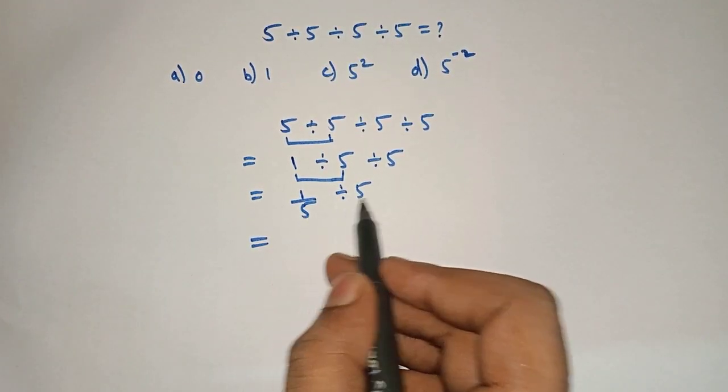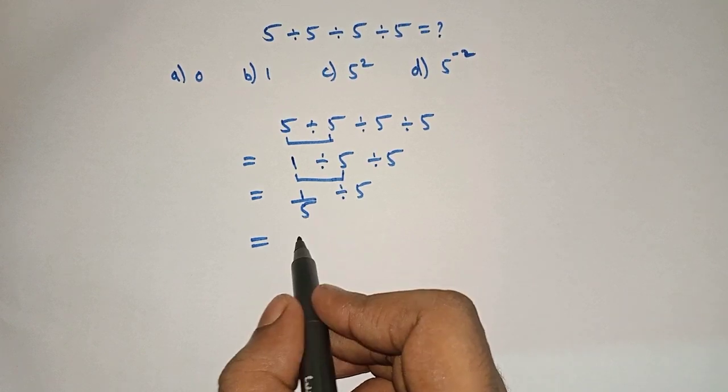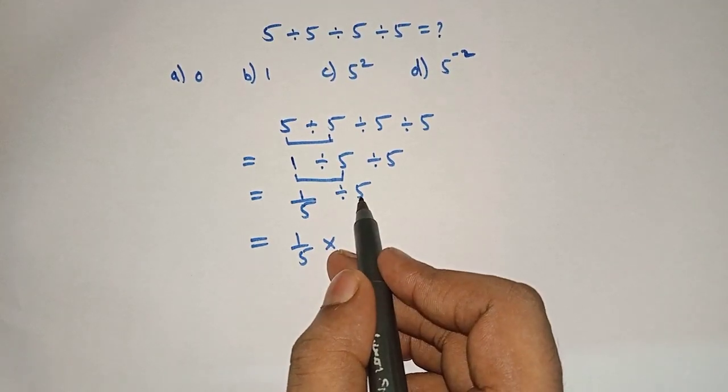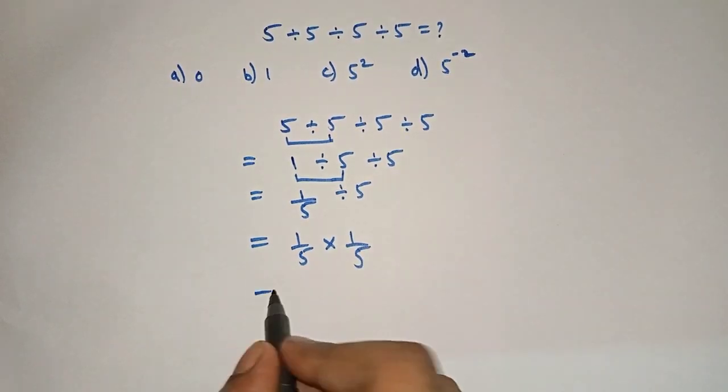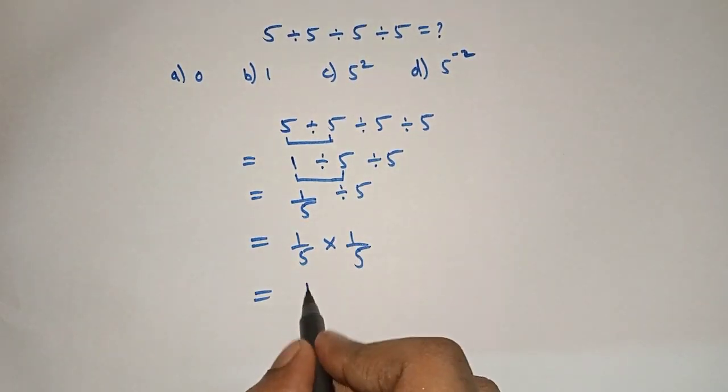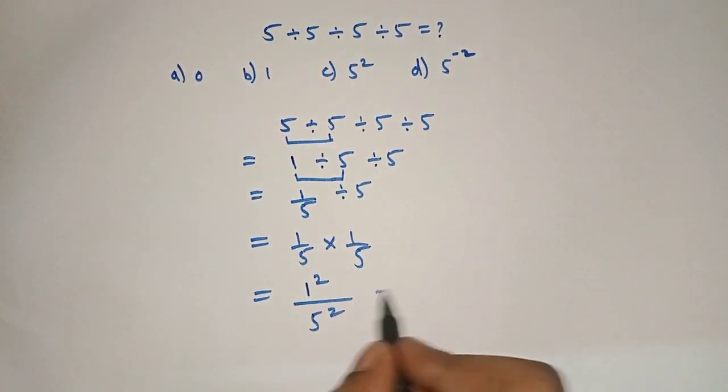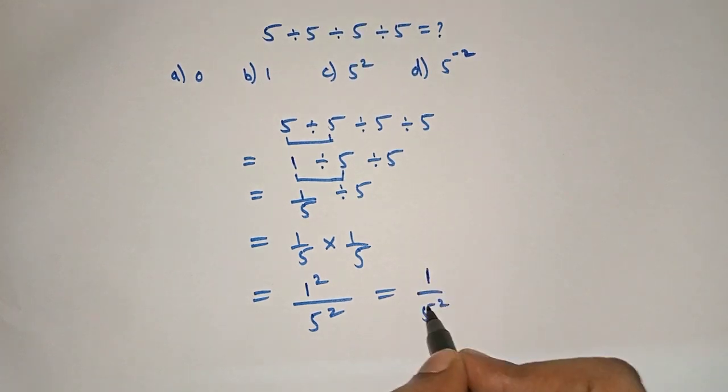we have to multiply 1 by 5 and take the reciprocal of 5. Now 1 into 1 is 1, 5 into 5 is 5 squared. So it will be 1 by 5 square.